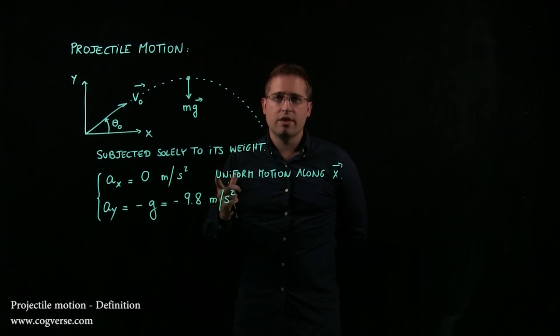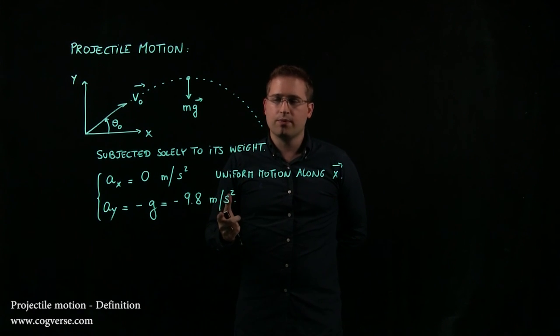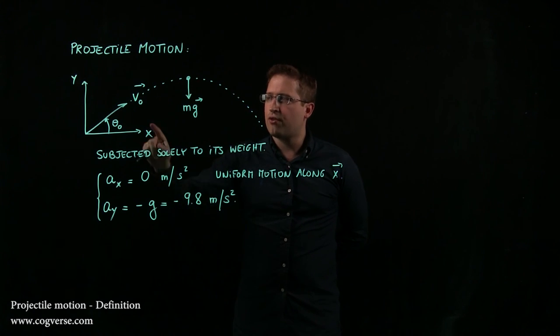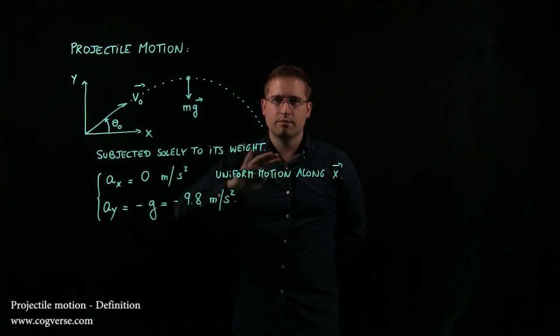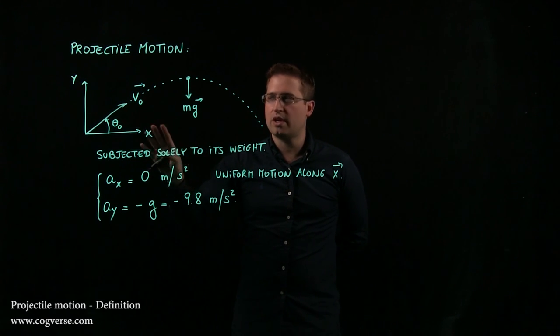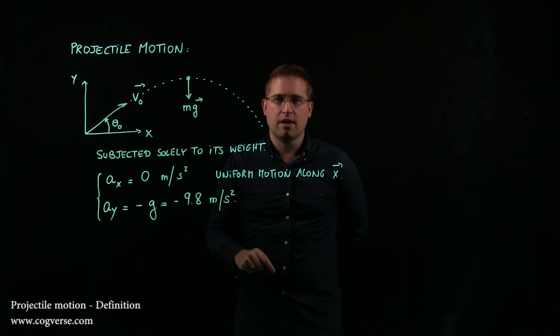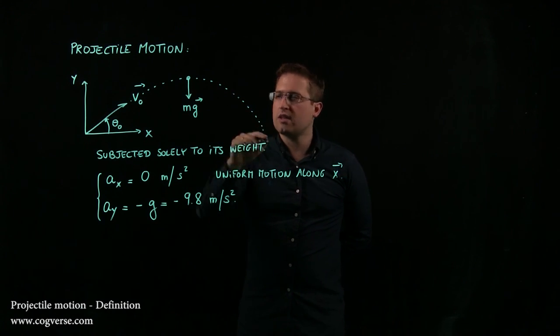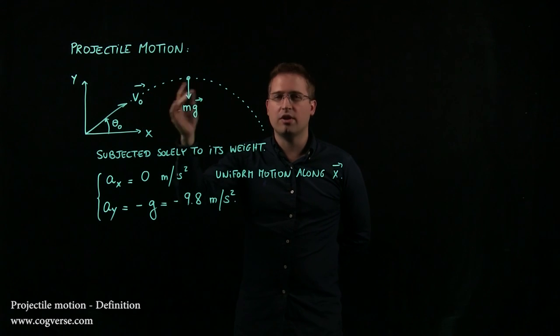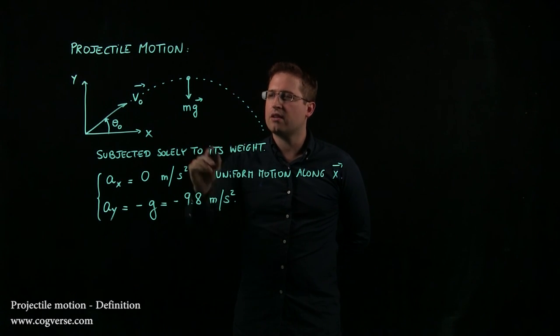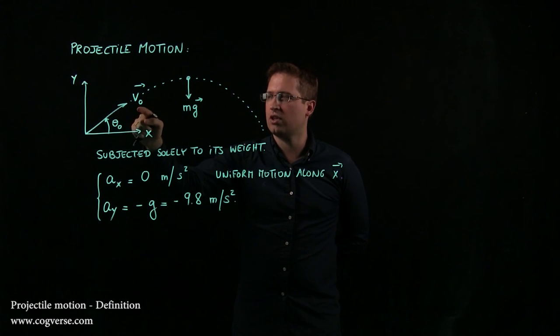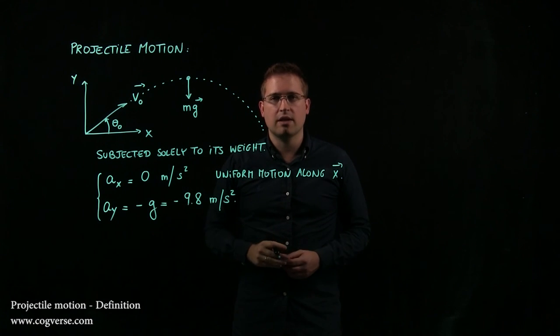Now one thing that's important to remember is that for a given v naught and a given theta naught everything is set. It gives you one path once you set v naught and theta naught. There's nothing else after the launch that will interfere with the flight only mg and the path is set for one given v naught and one given theta naught.